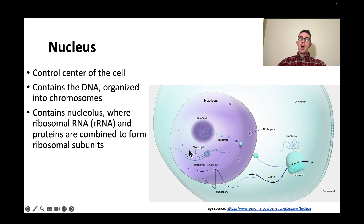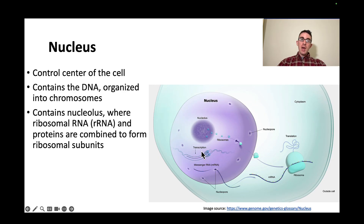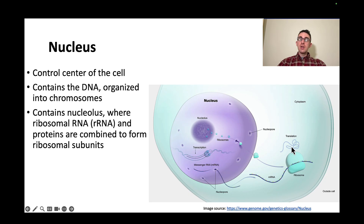I've got a picture over here. You might remember from the previous video the terms transcription and translation — if you forgot, don't worry, because we'll talk more about them pretty soon. They're labeled here in this picture. Transcription is where the mRNA is created from the DNA, and that happens inside the nucleus, at least in eukaryotes. Translation is stringing together the protein out of amino acids using the information in the messenger RNA. We'll cover it in more detail pretty soon.